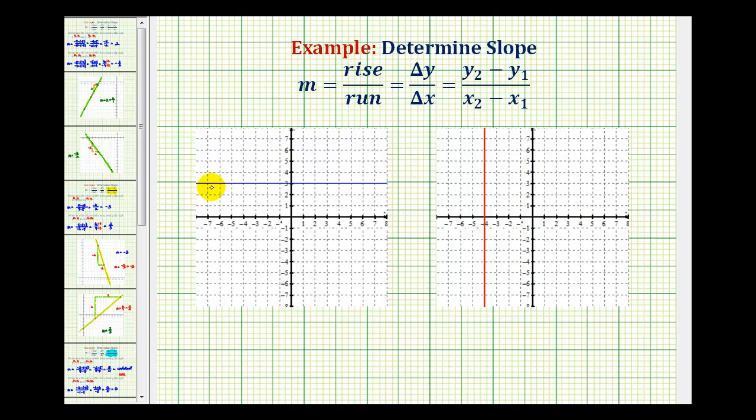We want to determine the slope of this horizontal line here in blue and this vertical line here in red. Now, assuming we don't already know what these slopes would be, there's a couple ways of doing this.